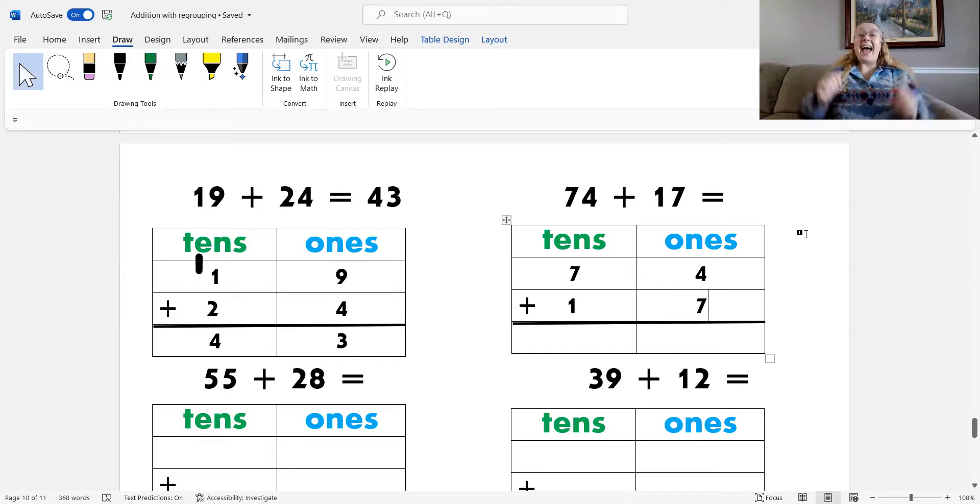Yes. Add the ones. 4 plus 7. Okay, 7 and 4 make... That's right, 11. And I'm going to think in my head. 11 is the same as 1 ten and 1 one. So, I'm going to put the 1 one in the ones column and add the 1 ten to the tens column.